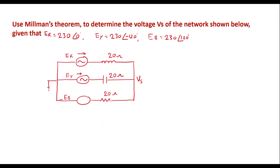Now let me consider the second example. Here the values of Er, Ey, and Eb are given along with the impedance values. The 20 ohm inductive element is J20, the capacitive element is −J20 ohm, and the resistive element remains 20 ohm. The Millman's voltage formula is: Vm = (V1·Y1 + V2·Y2 + V3·Y3) / (Y1 + Y2 + Y3).